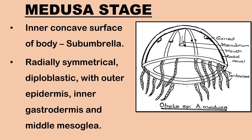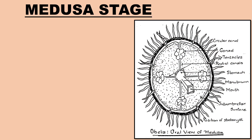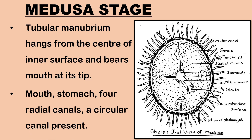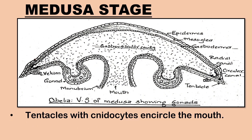The middle gelatinous non-cellular layer is the mesoglia. Medusa possesses a short tubular structure, the manubrium, that hangs from the center of the inner surface and bears a mouth at its tip. The mouth leads into the stomach. Four radial canals and a circular canal form the gastrovascular system, which helps in digestion and circulation of food. Tentacles with nematocysts encircle the margin and are used in defense and in capturing prey.